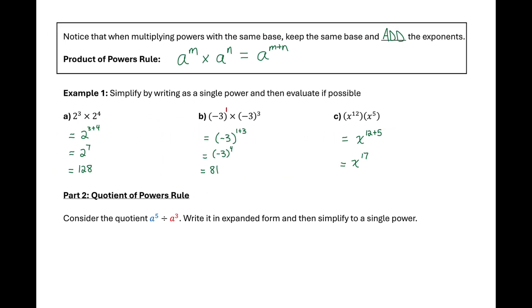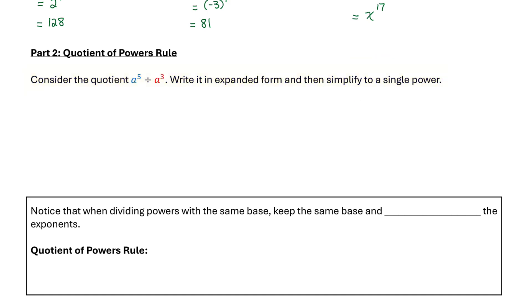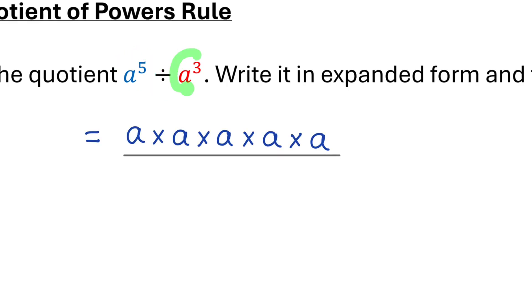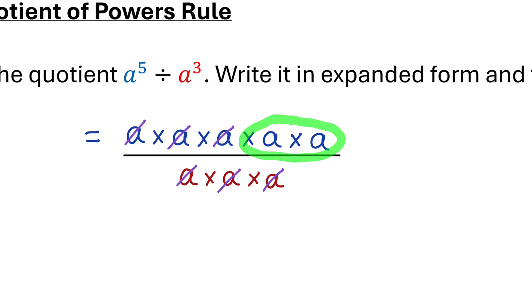Now let's move on to the second part of this lesson, where I teach you about the quotient of powers rule. We'll consider this quotient: a to the power of 5 divided by a to the power of 3. I have five factors of a being divided by three factors of a. Notice that a factor of a divided by a factor of a — anything divided by itself is 1 — so I can cancel out pairs of factors. Cancelling three pairs of a's leaves me with just two factors of a in the numerator, which I can write as a single power: a to the power of 2.